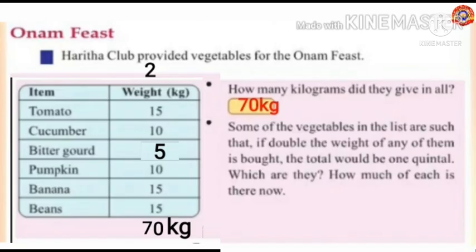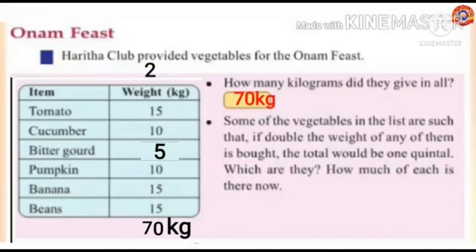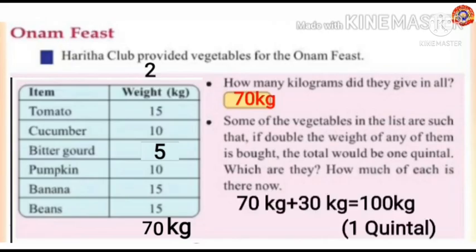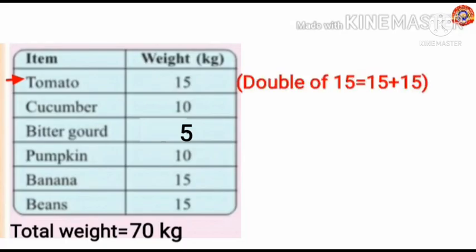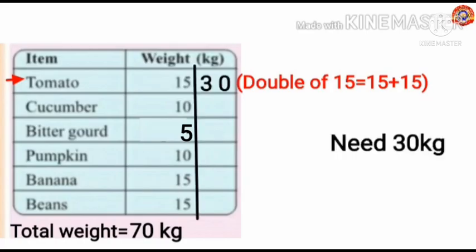Next question: Some of the vegetables are such that if double the weight of any of them is bought, the total would be one quintal. Which are they? The weight of vegetables is 70 kilograms; to make a quintal, 30 more kilograms are needed. Take the first item, tomato — its weight is 15 kilograms. Double of 15 is 15 plus 15 equals 30 kilograms.